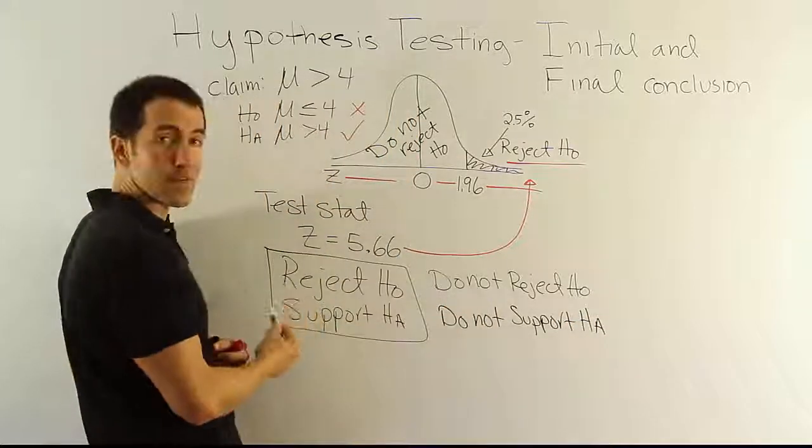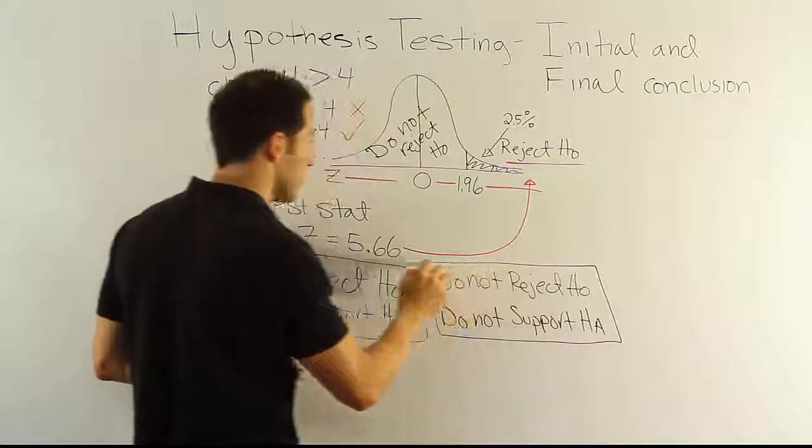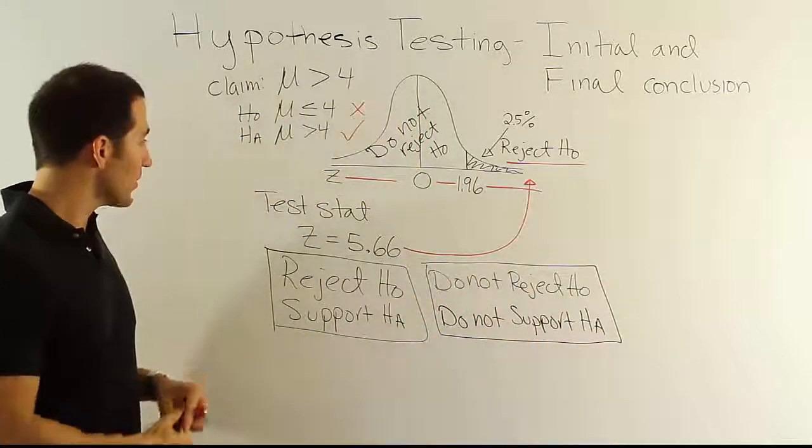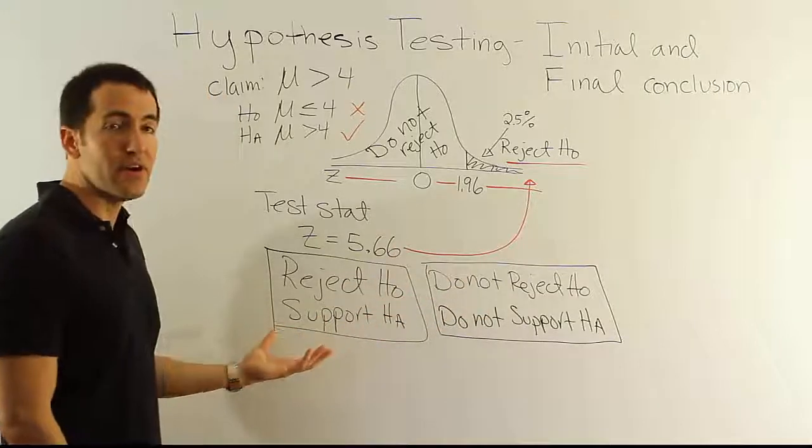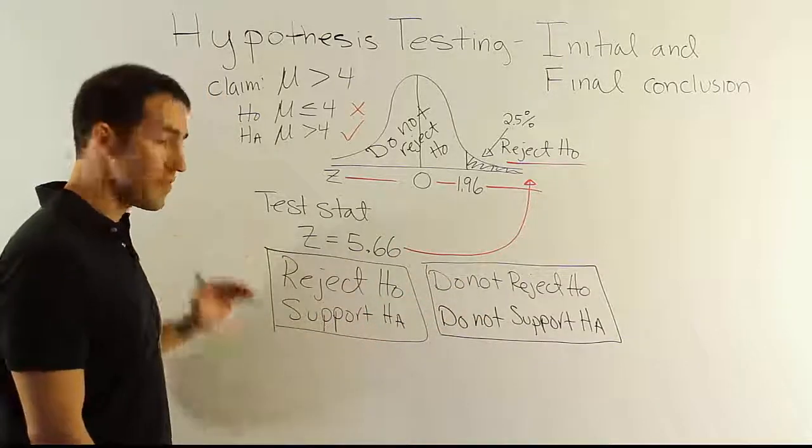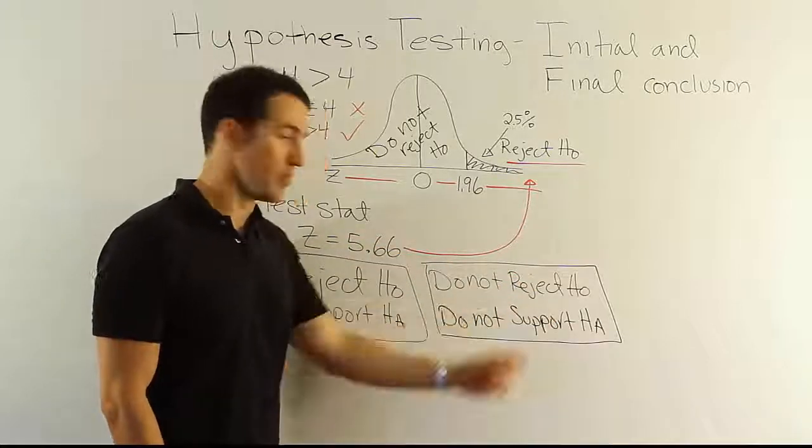So basically just throw do nots in front of these two statements, right? So that's that. Now when you look at it, you have only two possible scenarios that can occur. Either you reject H0 and therefore support HA, or you don't reject H0 and therefore you do not support HA.